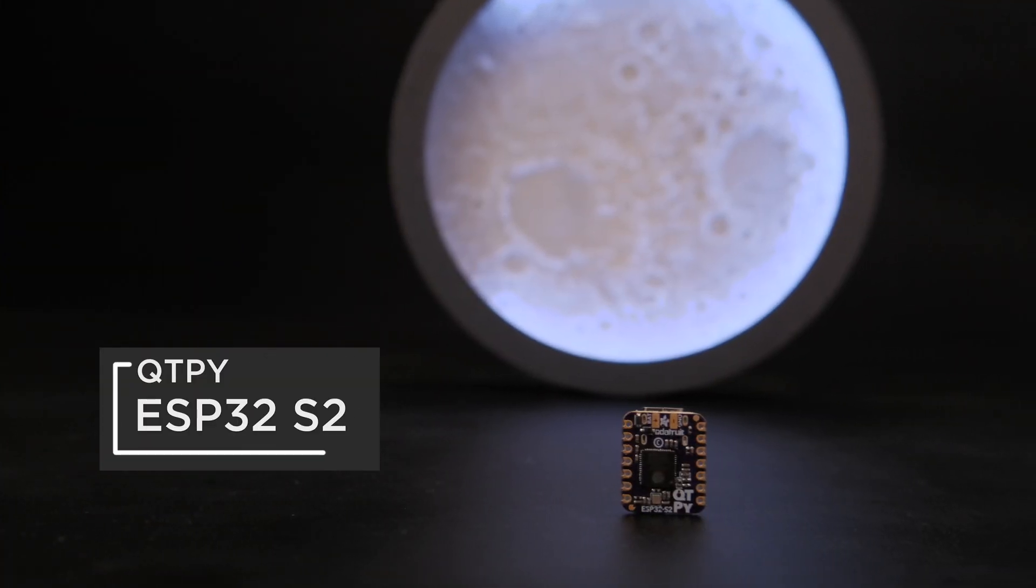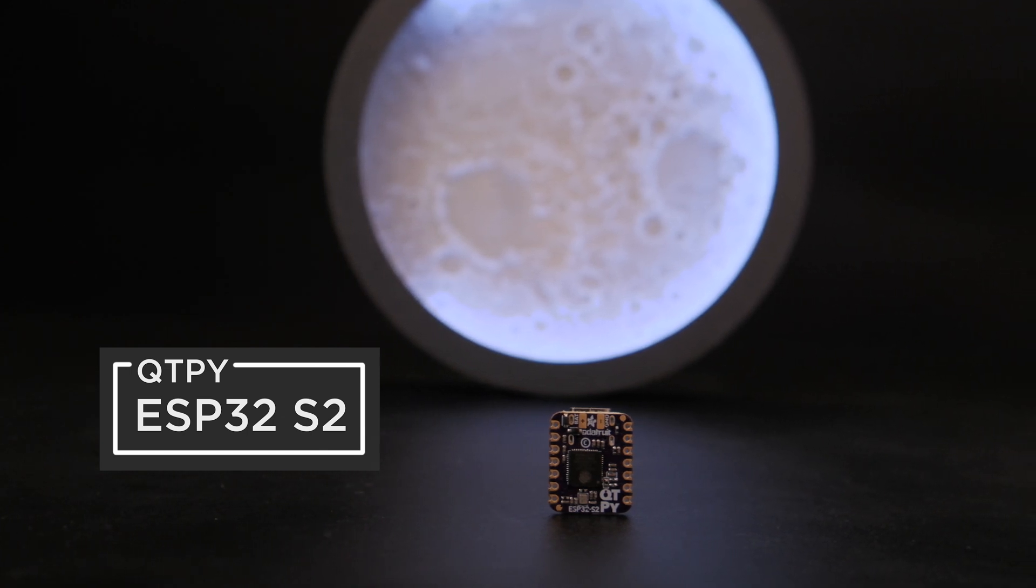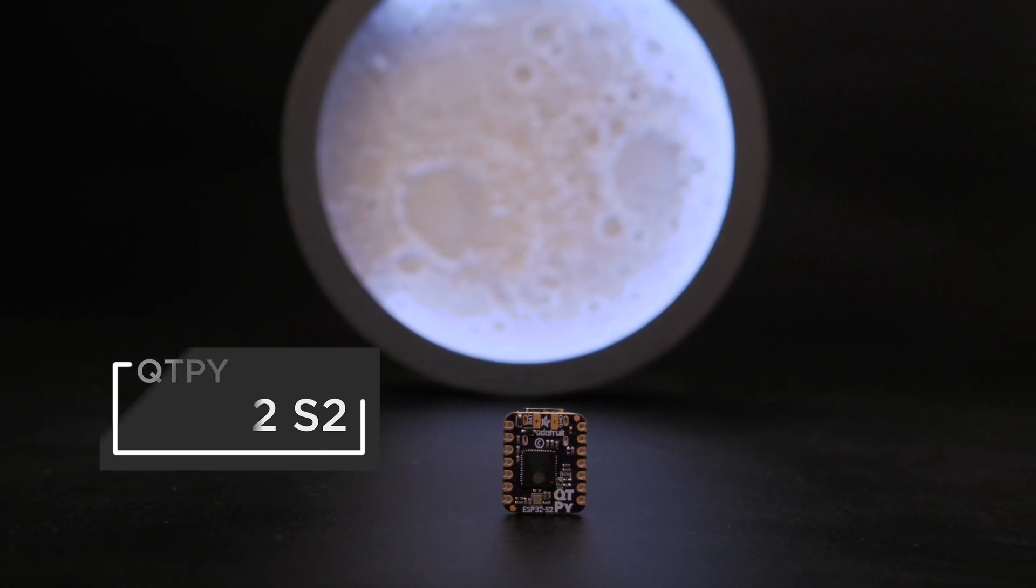Powered by the Adafruit CutiePie ESP32-S2, it uses the FarmSense API to get the phase of the moon.